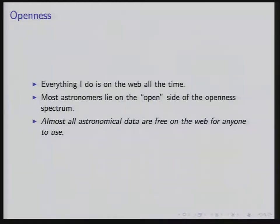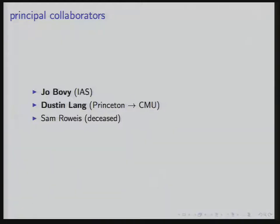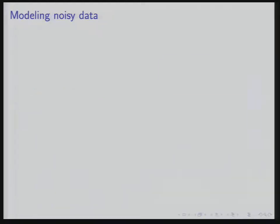There's a lot of code on the web too. Data on the web aren't that useful without code also being on the web — that's why I connect these two things. If you want to get started using astronomical data, you usually need to look at somebody's code to understand how to begin. The three most important collaborators are Joe Bovey and Dustin Lang, both former students now postdocs, and Sam Royce, who was really the origin for almost all this work.